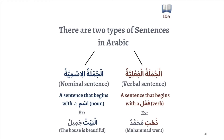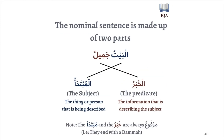Each of these two sentence types is always made up of two parts. The nominal sentence is made up of two parts. When we look at albaytu jamilun, which means 'the house is beautiful', it is a nominal sentence because albaytu is a noun that begins the sentence. A nominal sentence is always made up of the mubtada — albaytu — and the khabar — jamilun. The mubtada is the subject, the thing or person being described, while the khabar is the predicate, the information that is describing the subject.